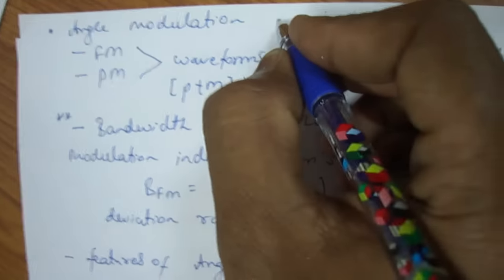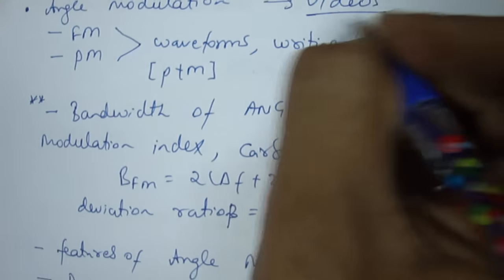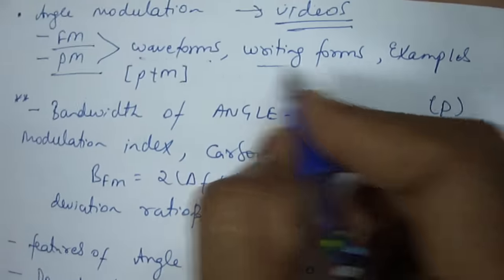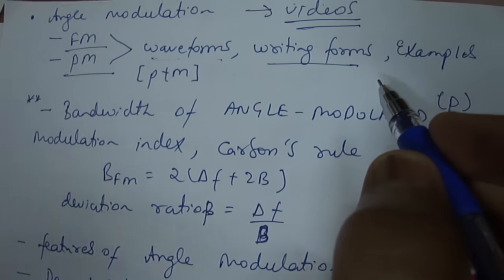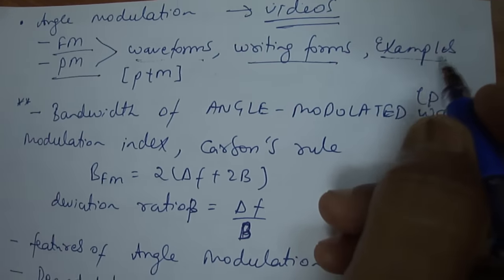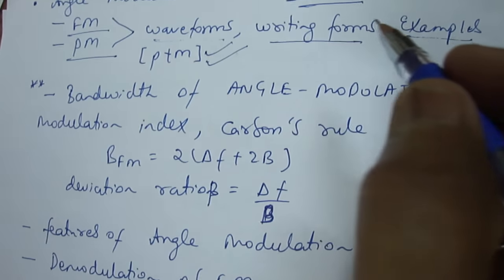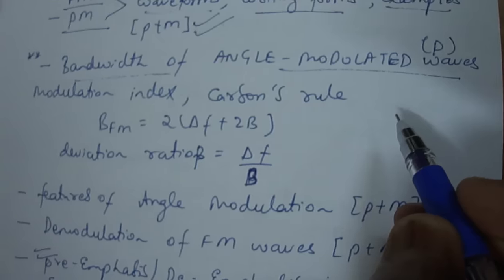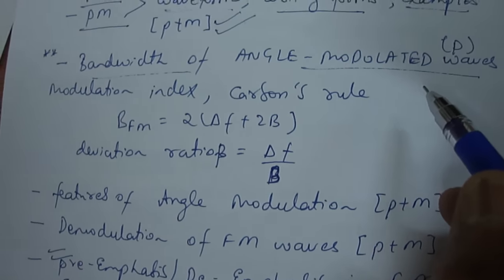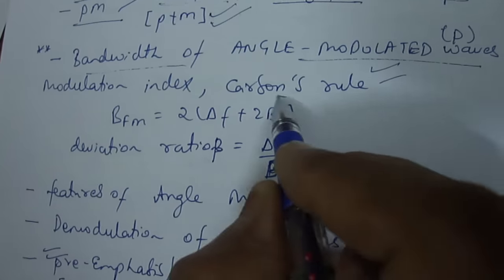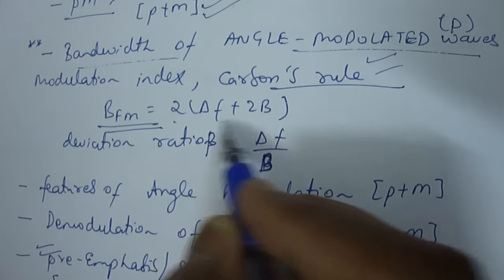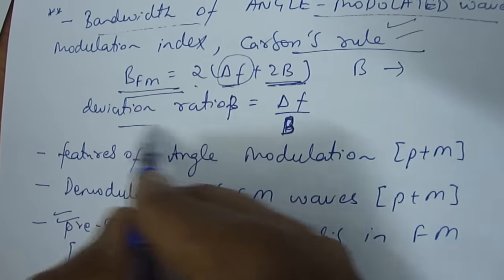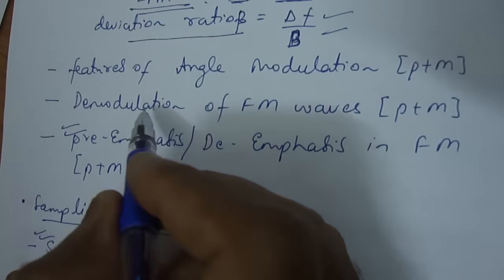Then coming to angle modulation — already covered in my previous videos, so please check those if you haven't. Topics include frequency modulation and phase modulation waveforms: how do you write the FM wave expression and how do you write the PM wave expression — important both for prelims and mains. Then bandwidth of angle-modulated waves: first wide-band frequency modulation, then narrow-band approximation, called Carson's rule. The bandwidth of an FM signal is 2·ΔF + 2B, where B is the maximum frequency of the message signal. The modulation ratio β = ΔF / B is very important.